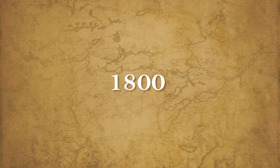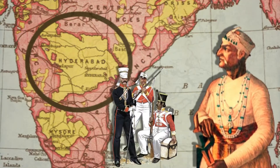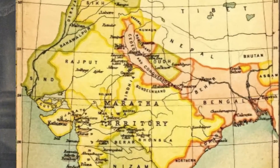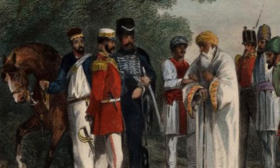If the rulers failed to make their payments, a part of the territory was taken away as penalty. So in reality, by signing a subsidiary alliance, an Indian state virtually signed away its independence. The cost of British subsidiary forces was very high and beyond the paying capacity of these states. In 1800, the Nizam of Hyderabad gave part of his territory to the company in lieu of cash payment for the subsidiary forces. The Nawab of Awadh was forced to give half of his kingdom to the company in 1801.